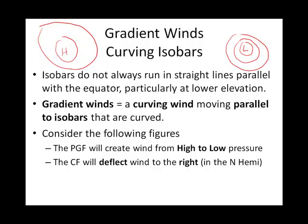I'll talk you through these two scenarios. We're going to call low pressure systems cyclones, and there's a slide coming up to show you this. We're going to call central high pressure systems anticyclones. Basically they follow the rules we've already talked about: air wants to move from a high to a low pressure, and then in the northern hemisphere it's going to be deflected to the right. We'll look at those gradient winds as they curve around cyclones and anticyclones — these are closer to the Earth's surface, not aloft winds.